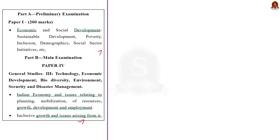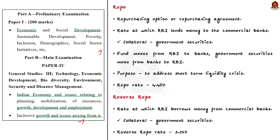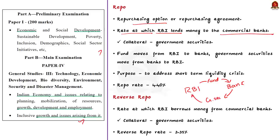Repo here stands for repurchasing option, also called repurchasing agreement. Repo rate is the rate at which RBI lends money to the commercial banks. RBI provides funds to commercial banks after getting government securities as collateral. Both parties sign an agreement of repurchasing the government security at a specific date at a predetermined price. Commercial banks use the repo instrument to address short-term liquidity requirements. In reverse repo, it is the interest rate provided by the RBI while it borrows money from the commercial banks — the other way around.